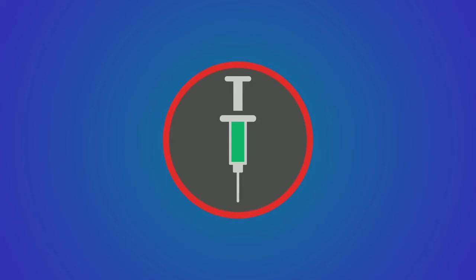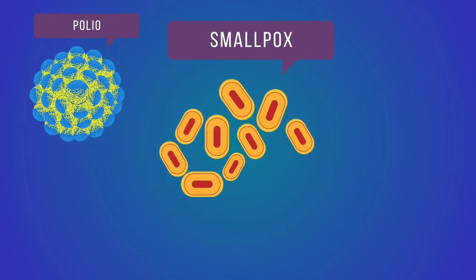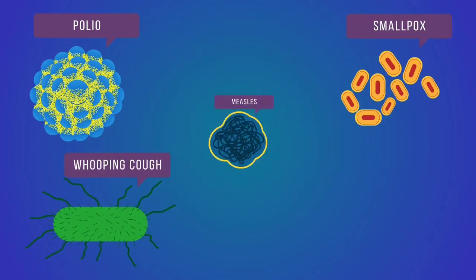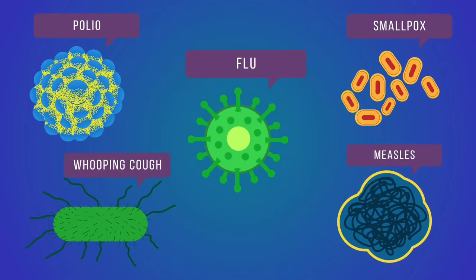By taking advantage of immunological memory in this way, vaccination prevents and controls the spread of a wide range of illnesses, including polio, smallpox, whooping cough, measles, and the seasonal influenza virus.